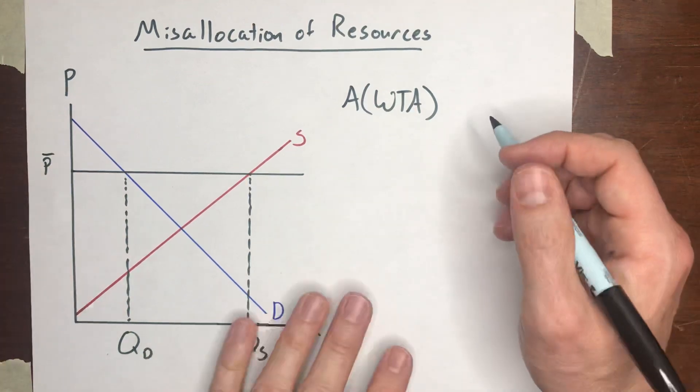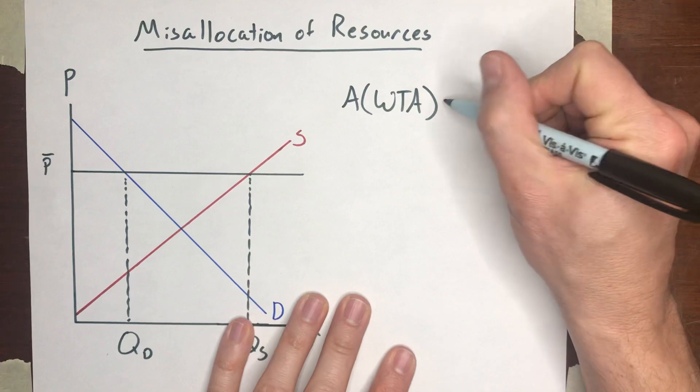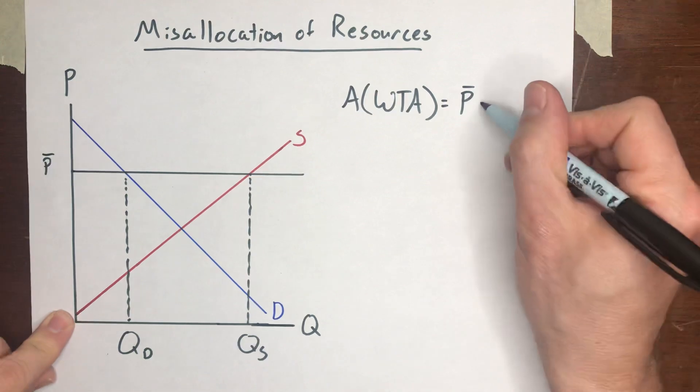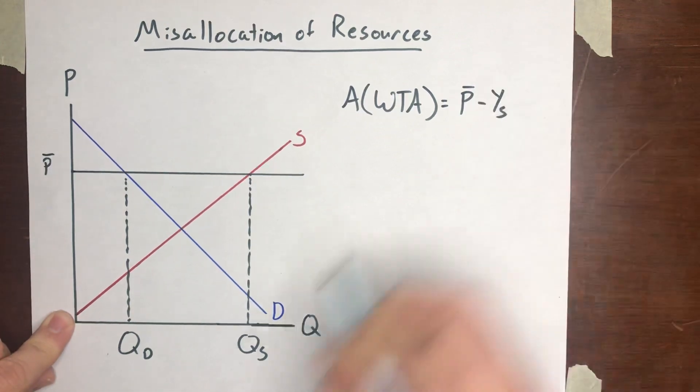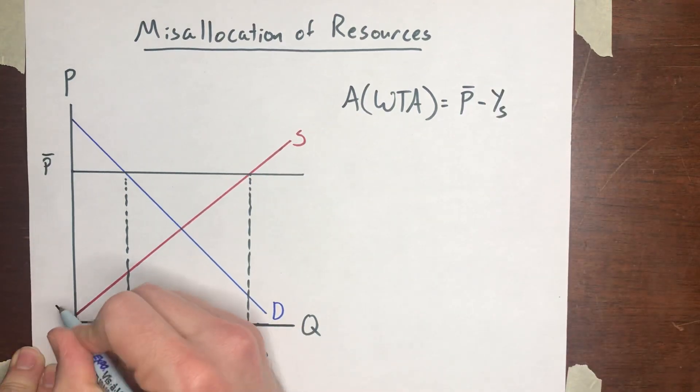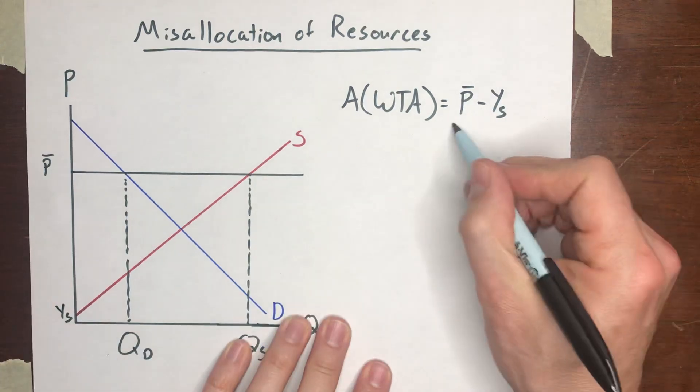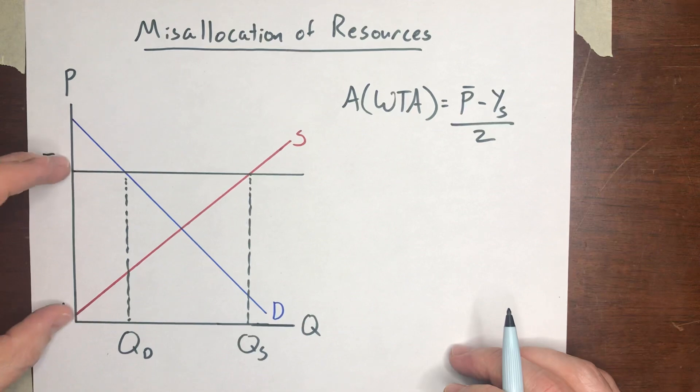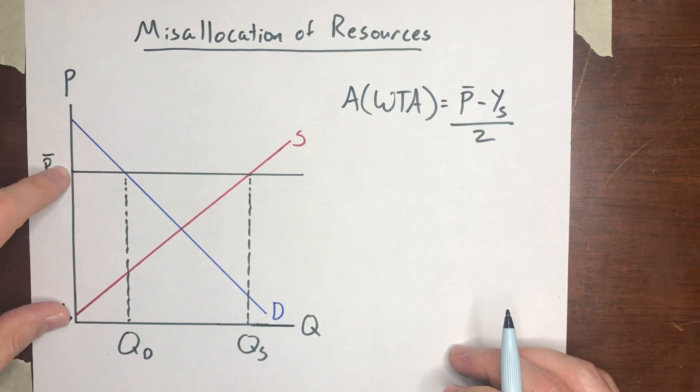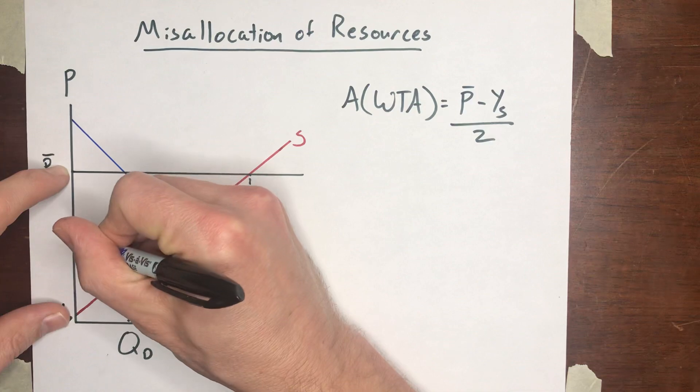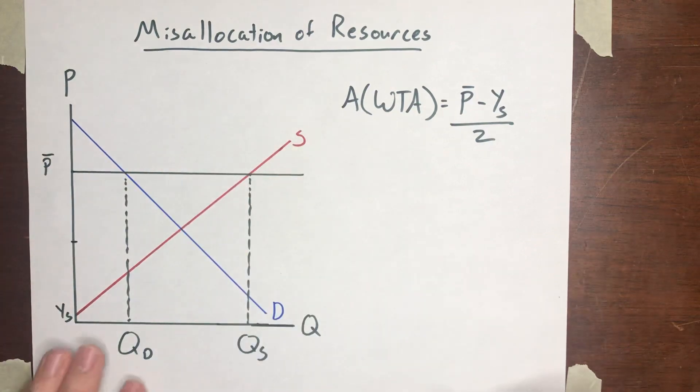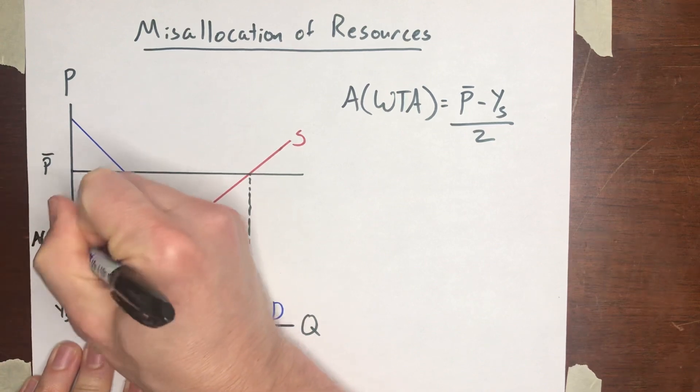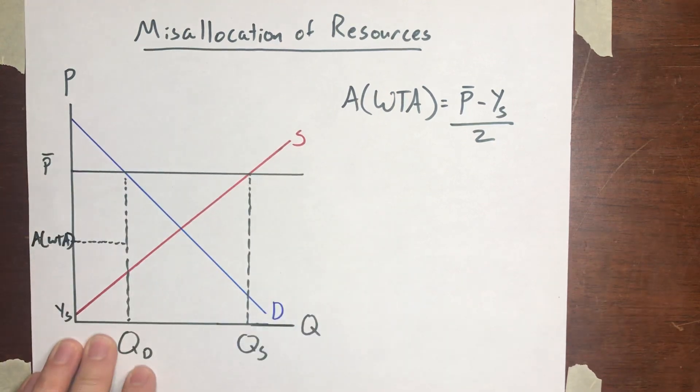Well, that's pretty easy to do. We're just going to take the legislated price, subtract out the y-intercept of the supply curve. Remember, we call that Ys, divide those by two. That's the same as finding the average between the two of them, or the midpoint between the two. And that's going to be somewhere about on this graph, about there. That's the average willingness to accept.